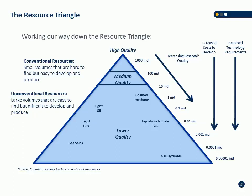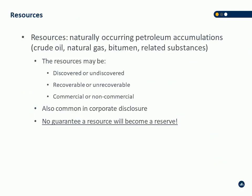Canada was up in the high-quality conventional zone for a long time — the Western Canadian sedimentary basin was our bread and butter for 70 to 80 years. It's only since 2000 that these unconventional resources have really opened up. Part of it is markets and pricing, part of it is the technologies available, but slowly we are working our way down the triangle. Canada is running out of the large conventional reservoirs that are easy and cheap to produce, so we're having to find more ways to be competitive with more difficult reservoirs.